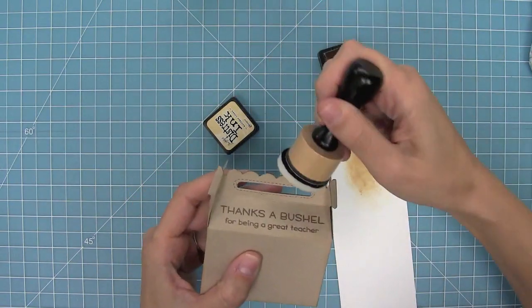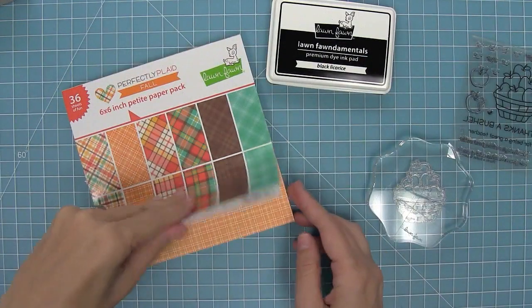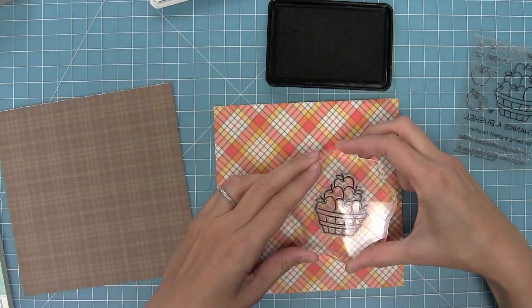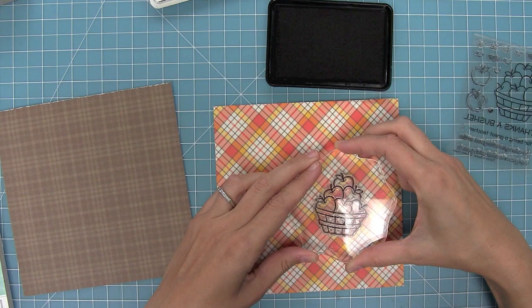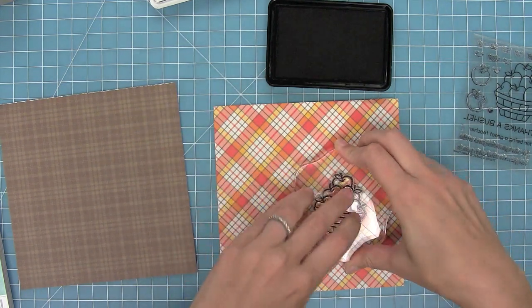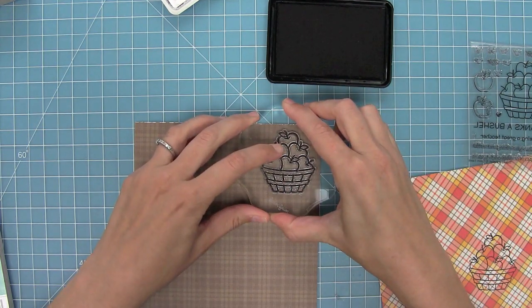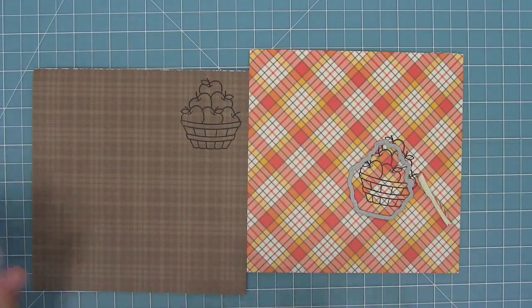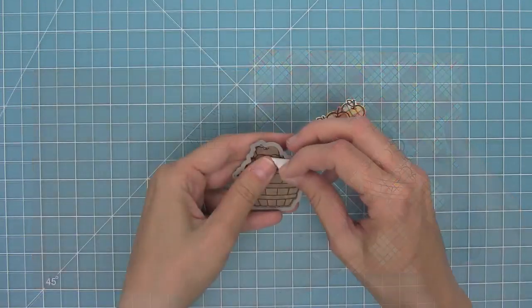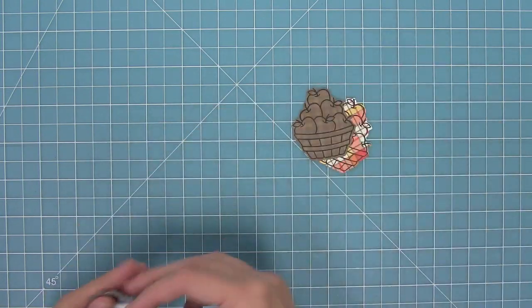And once this is all done, it's time to start decorating the box. So I'm actually going to paper piece the thanks a bushel of apples here. I'm going to stamp it on some patterned paper from Perfectly Plaid Fall and then stamp it again on some brown paper. I'm going to die cut both of these with the coordinating die, and once that is done I can start to put these two pieces together.